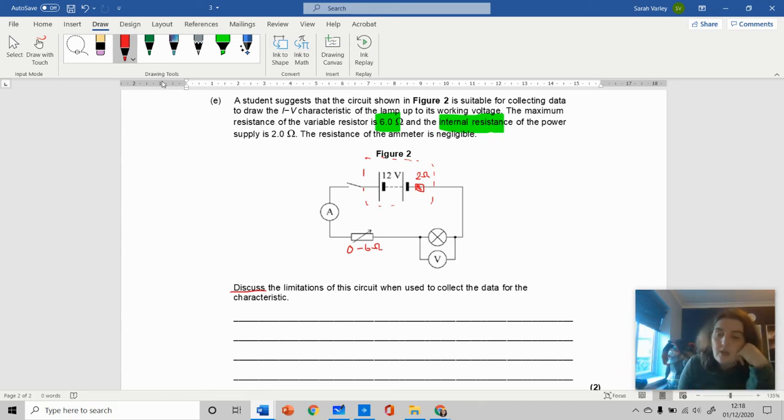It's asking you to discuss the limitations. Discuss means putting points across for or against this circuit. This is a 12 volt battery, but the internal resistor is always going to be there, which means it's going to take some potential away. This lamp will never reach its 12 volt working voltage. That is one of the limitations - it will never reach its top working voltage because the internal resistor always removes PD.